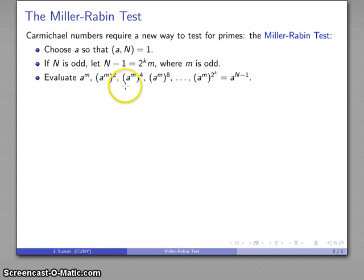a to the m squared, a to the m to the 4th, to the 8th, and so on, all the way up to a to the m to the 2k, which is m times 2k equals n minus 1.